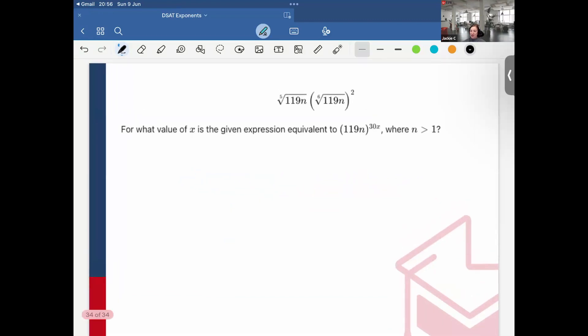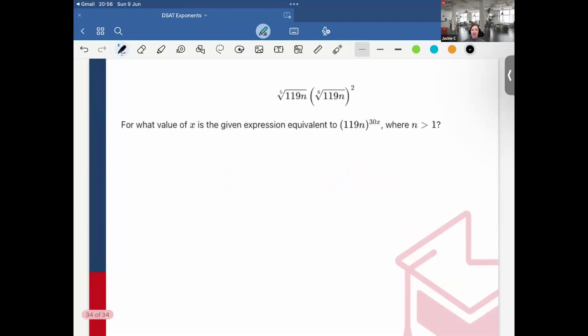So here I can see that I have 5 root 119n multiplied by 6 root 119n squared. And then it says, for what value of x is the given expression equivalent to 119n to the 30x, where n is greater than 1. This is where knowing the laws of exponent comes super in handy.